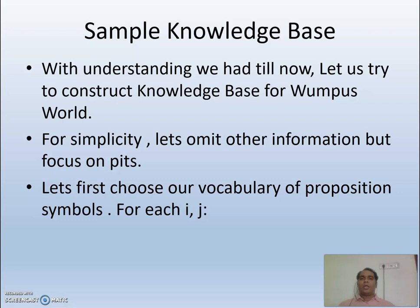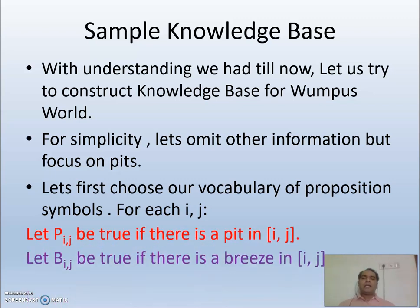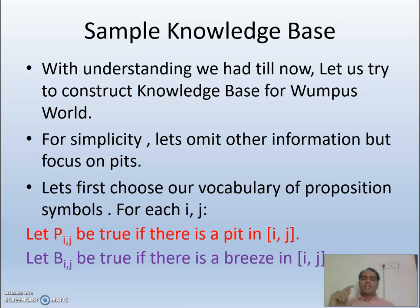First, let us choose our vocabulary of propositional symbols. As in earlier videos where P stood for humid and Q for hot, here we use i,j to indicate cell positions in the four-by-four Wumpus World grid. We use two symbols: P and B. P(i,j) is true if there is a pit in cell (i,j), and B(i,j) is true if there is a breeze in cell (i,j).